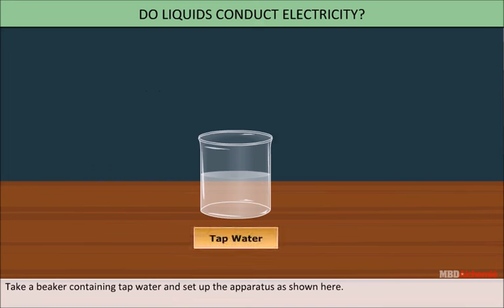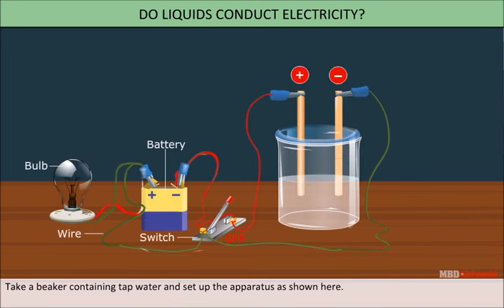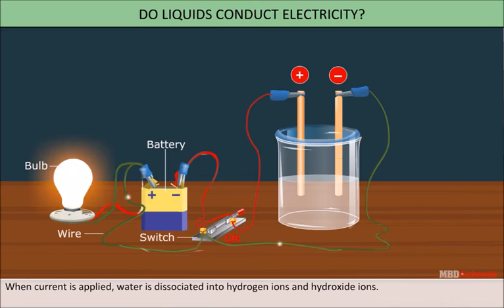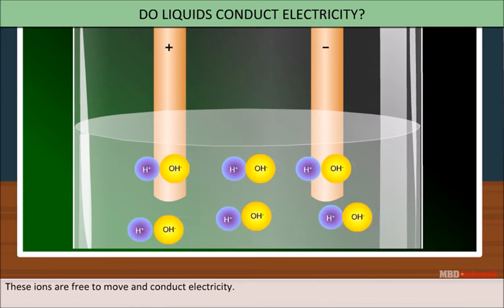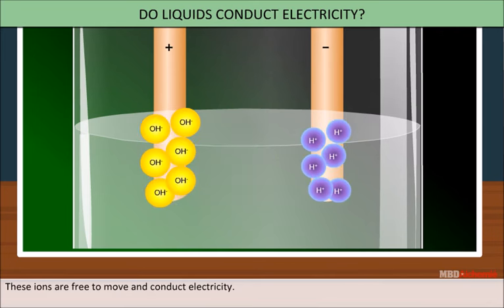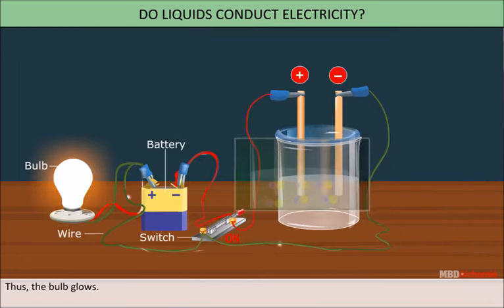Take a beaker containing tap water and set up the apparatus as shown here. When current is applied, water dissociates into hydrogen ion and hydronium ion. These ions are free to move and conduct the electricity. Thus, the bulb glows.